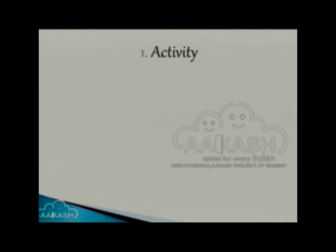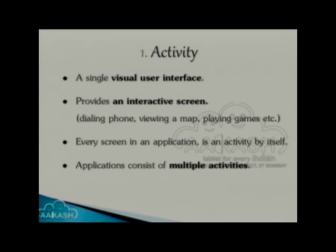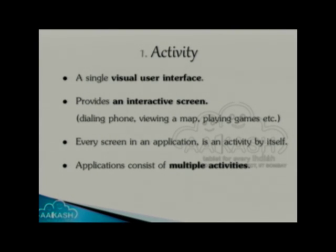The first component is activity — this is the most important component in Android. An activity is simply a user interface. In any application, each and every UI that you see — every screen that you interact with — is an activity. For example, playing a game, using a browser, viewing a map, or using a chat app — all of this is an activity. Since every screen is an activity, each application can have multiple activities.